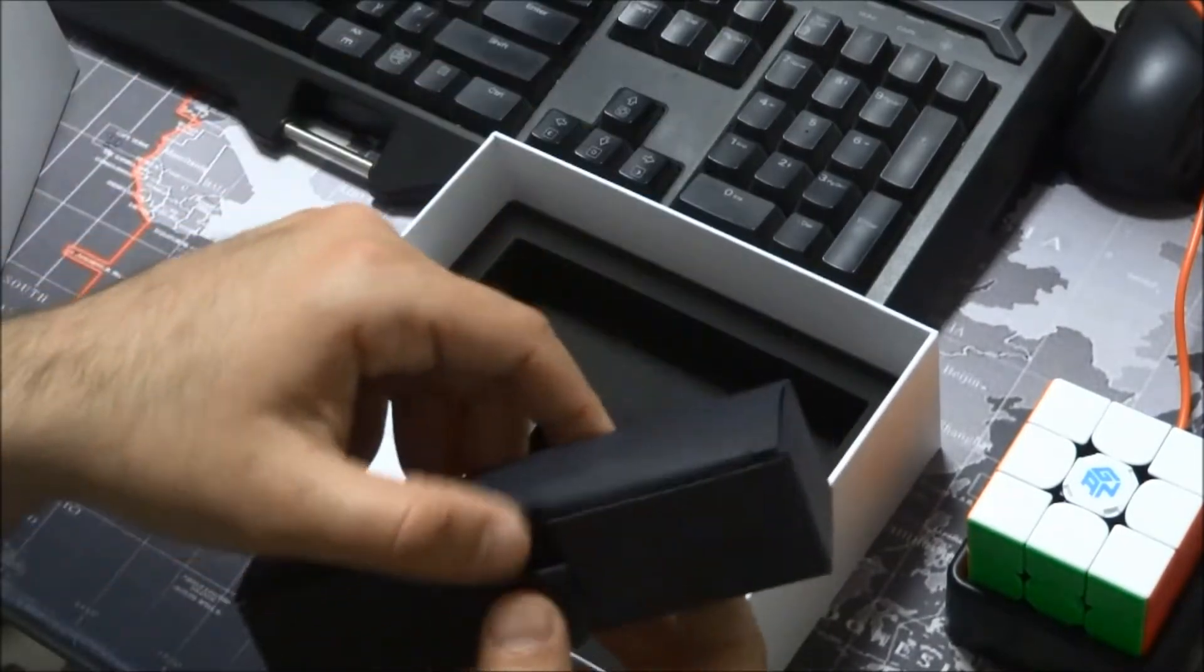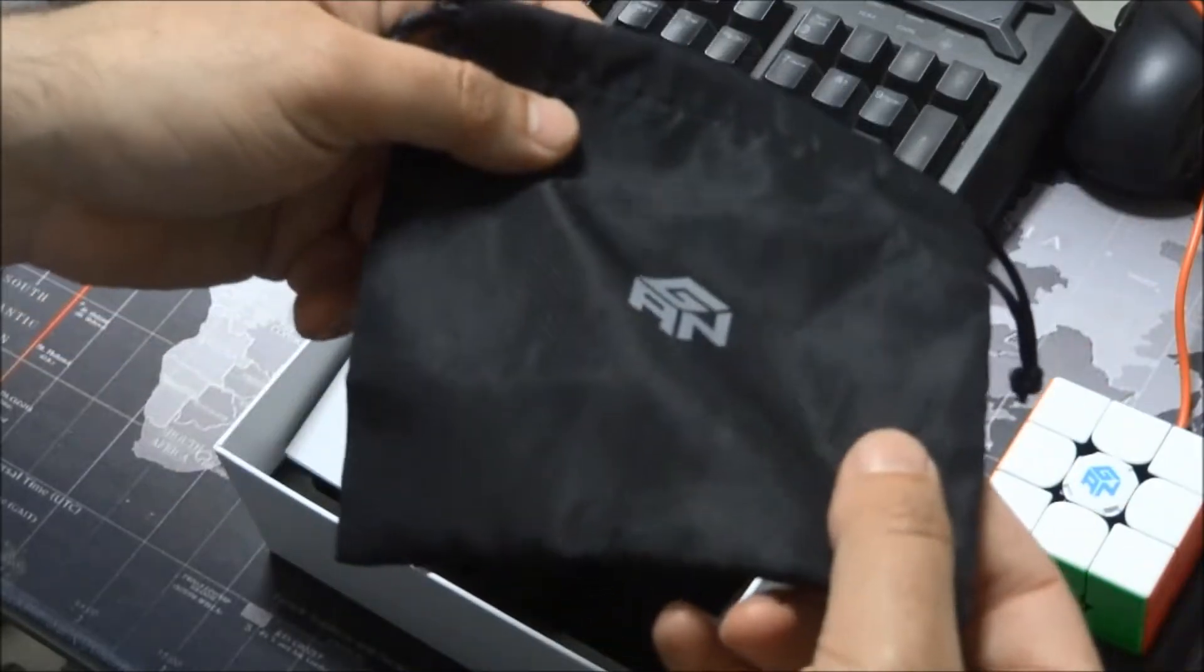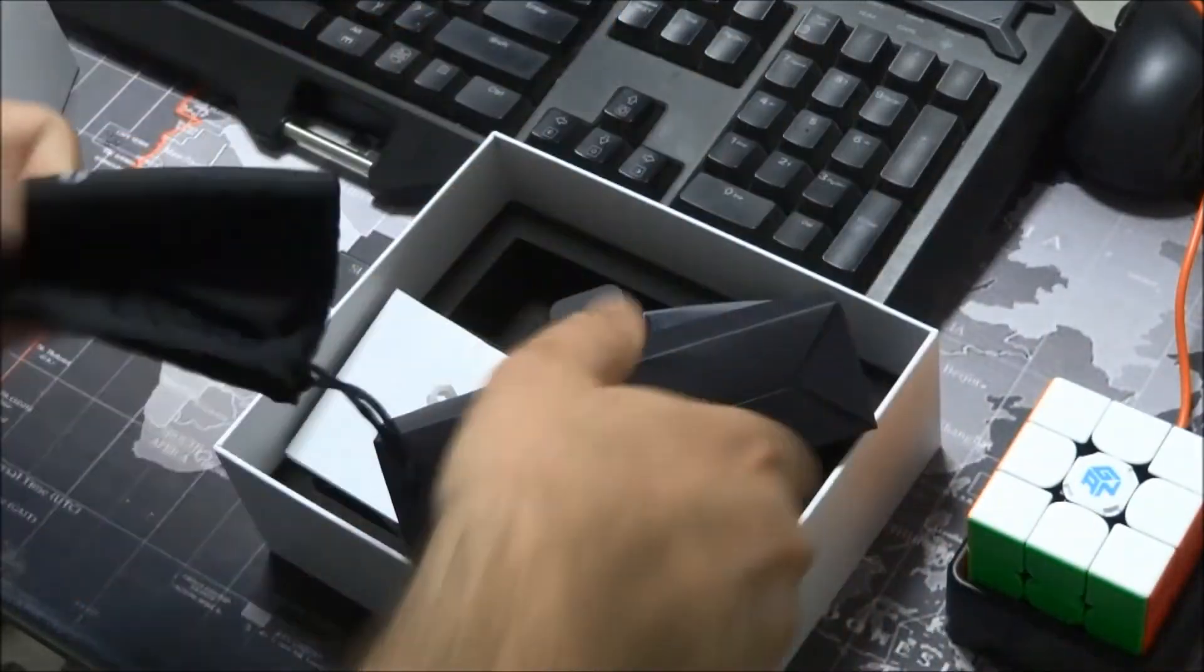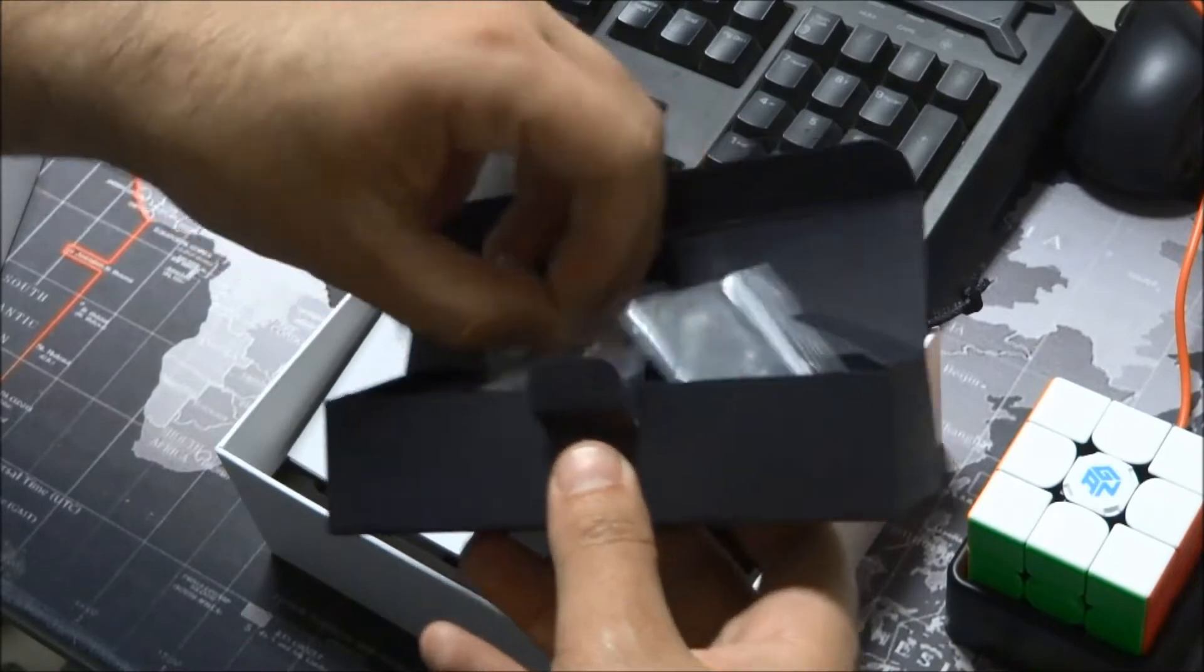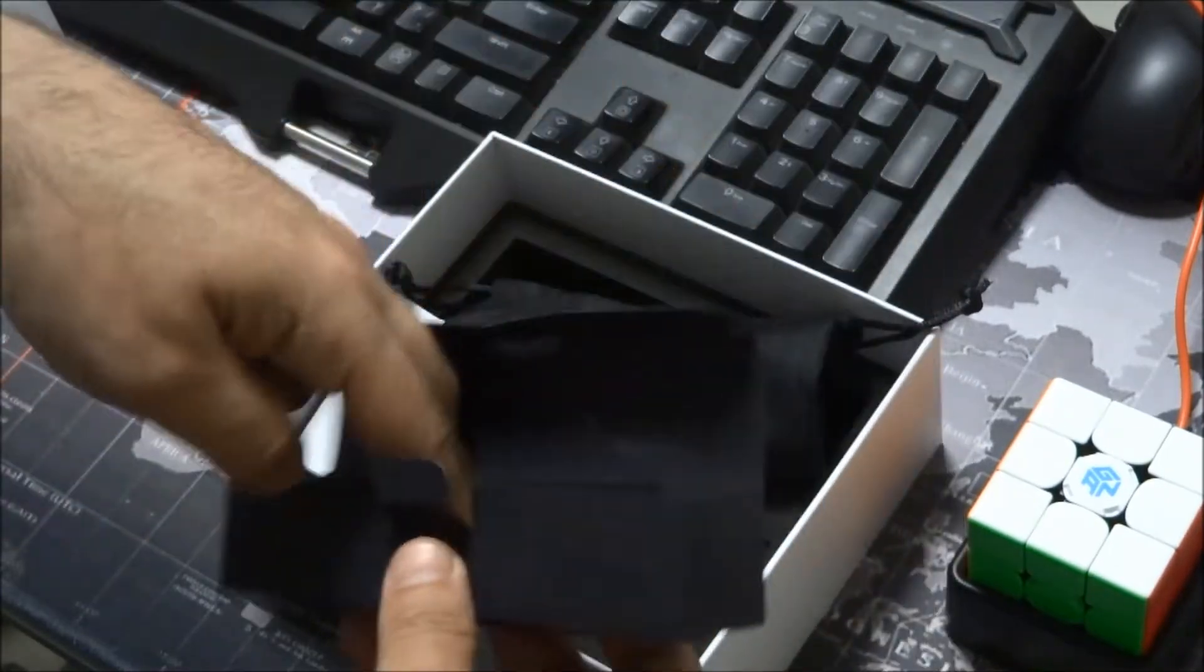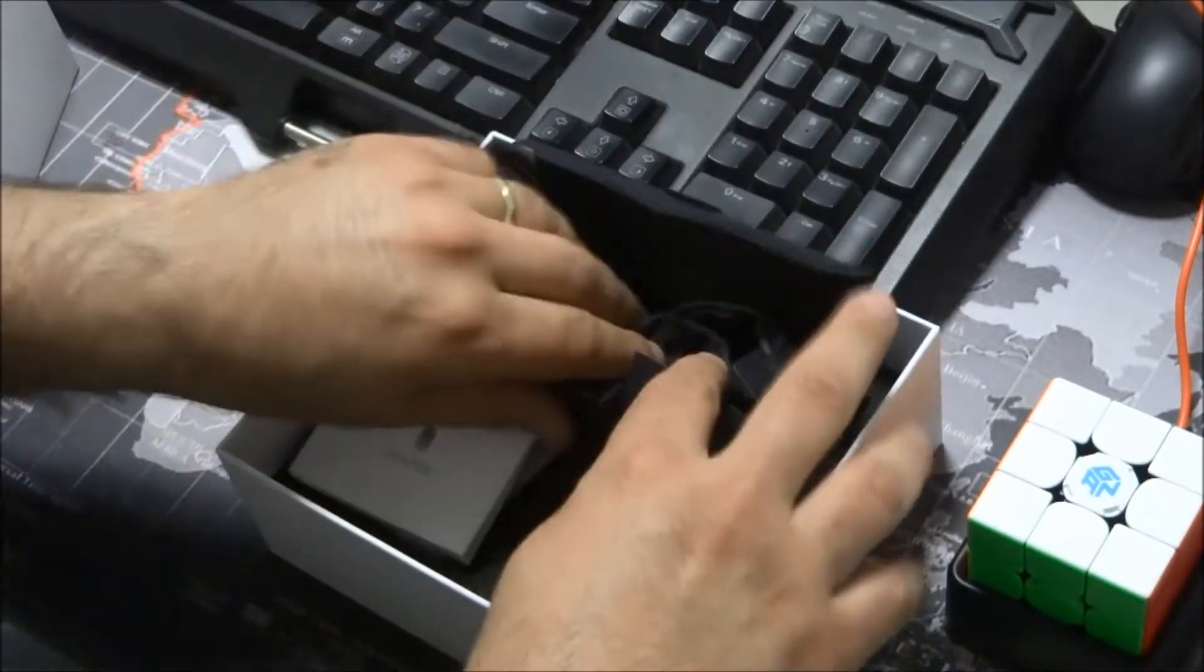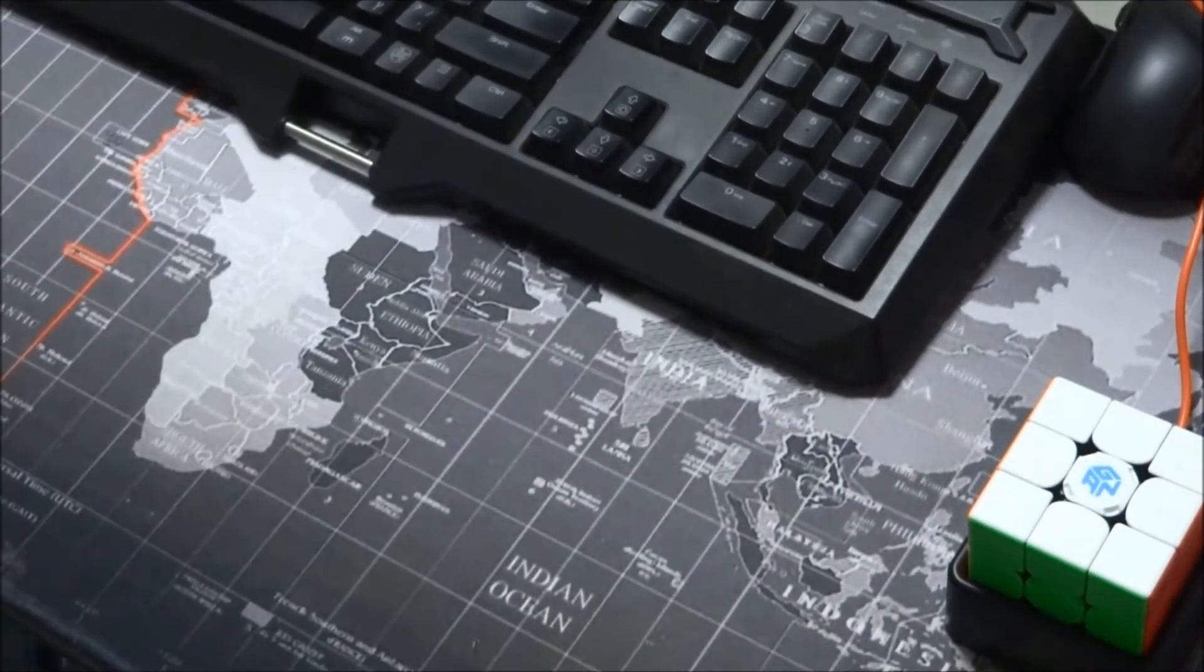And over here you can see you get a carrying bag, a black one, which I've never seen before. And you get two extra sets of springs, which means you can adjust this cube. We'll just put it on the side now.